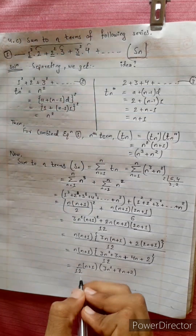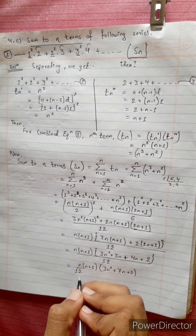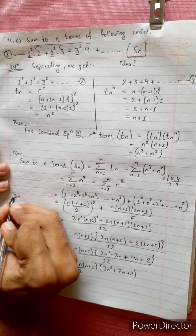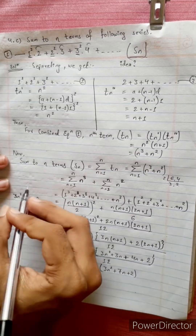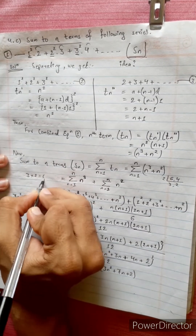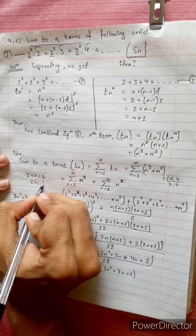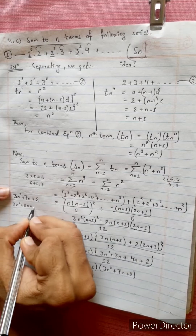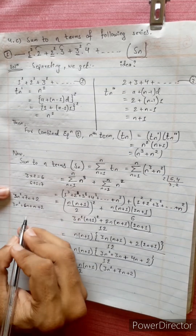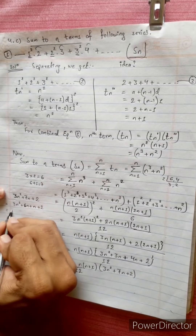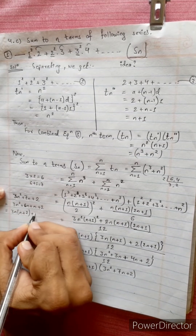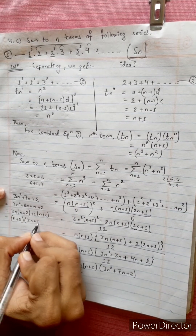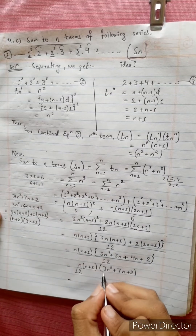Divided by 12. Now factorizing: 4c times n plus 1 times n plus 2 times 3n plus 1. Factorizing 3n squared plus 7n plus 2 — product is 3 times 2 equals 6, sum is 7 — gives 3n squared plus 6n plus n plus 2, equals 3n(n plus 2) plus 1(n plus 2), equals (n plus 2)(3n plus 1).